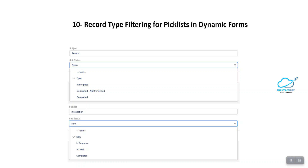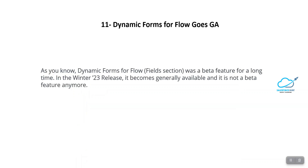Another feature is Dynamic Forms for Flow goes GA. Dynamic Forms for Flow was a beta feature for a long time. In the Winter 23 release, it becomes Generally Available and is no longer a beta feature. You can now use dynamic forms in flows.